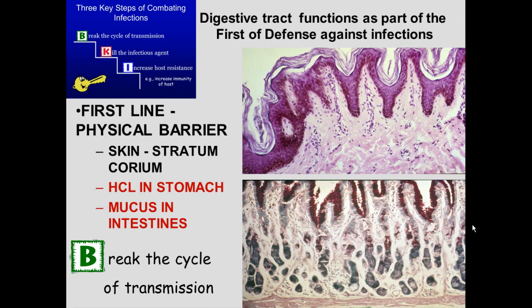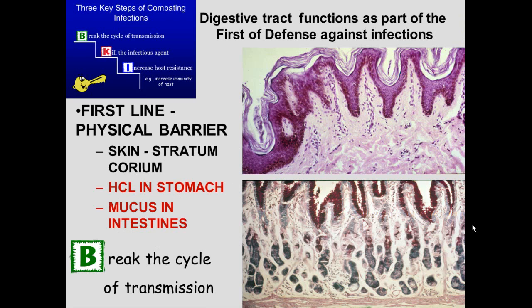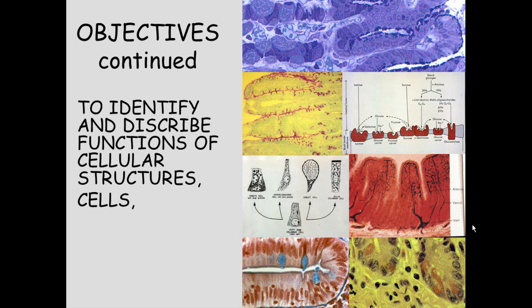One of the three key steps in combating infection is to break the cycle of transmission — that is, to have a physical barrier between your environment and you. The digestive system is part of that first line of defense against infections, with hydrochloric acid produced in the stomach and mucus in the intestines.